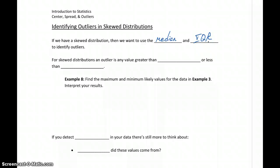For skewed distributions, an outlier is going to be any value that's greater than Q3, the third quartile, plus 1.5 times the IQR, or any value less than the first quartile minus 1.5 times the IQR.